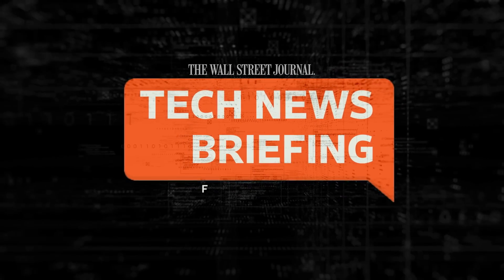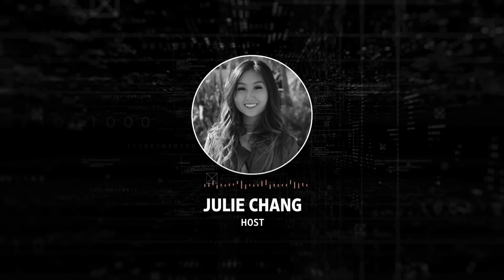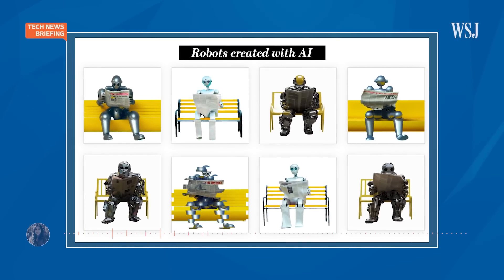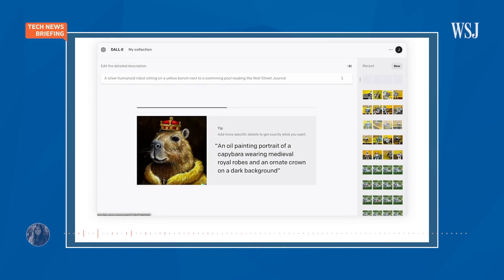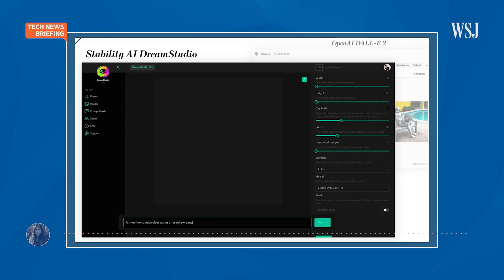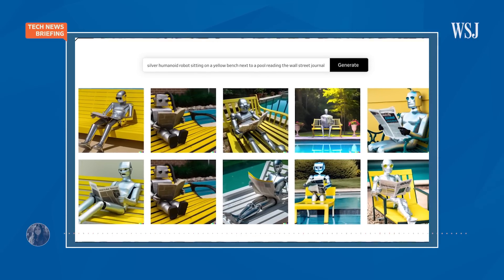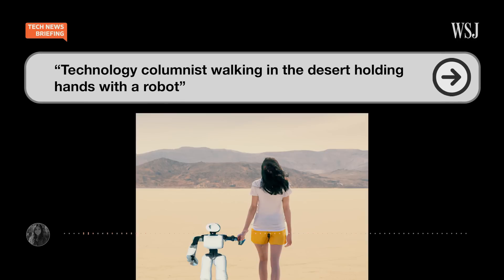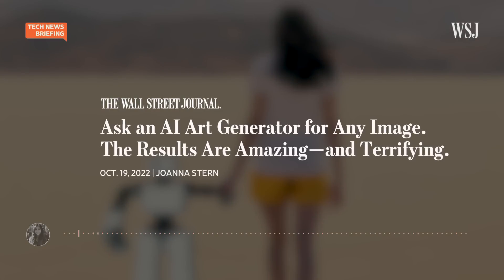This is your Tech News Briefing for Friday, October 21st. I'm Julie Chang for The Wall Street Journal, filling in for Zoe Thomas. Artificial intelligence has made it incredibly easy to create original works of digital art. Programs like OpenAI's DALL-E 2 and Stability AI's Dream Studio let you type in almost any phrase to get a computer-generated image. And while this can be a useful and even fun tool, some worry about the potential drawbacks or even dangers.